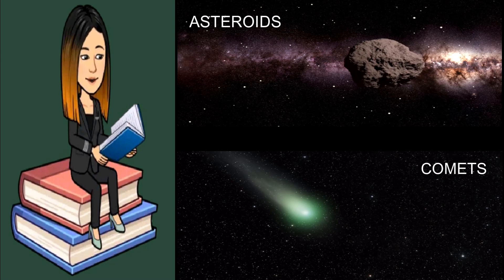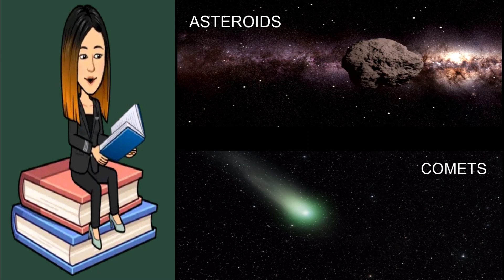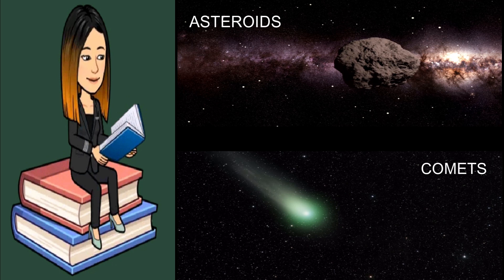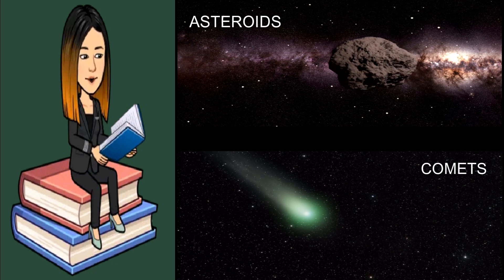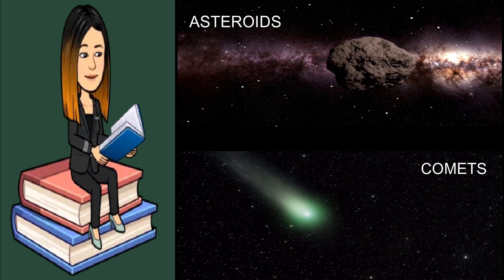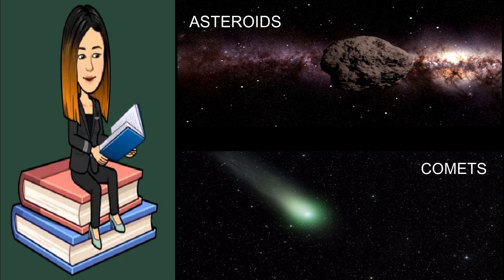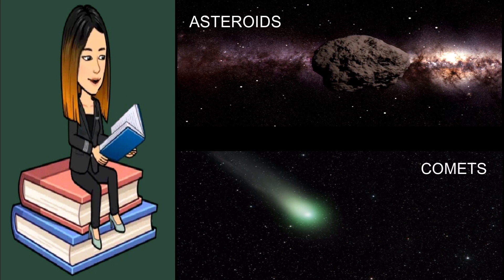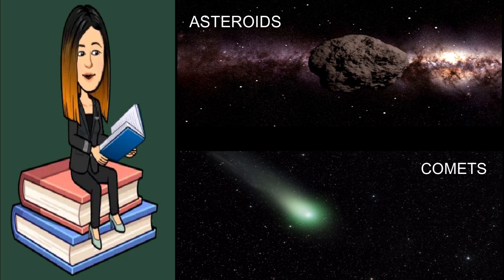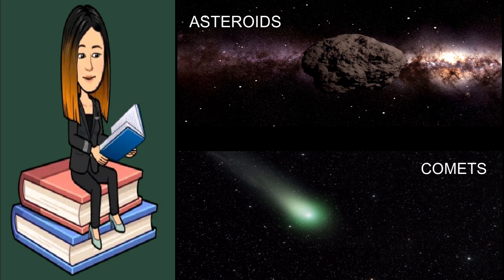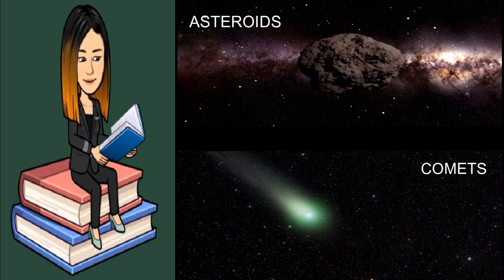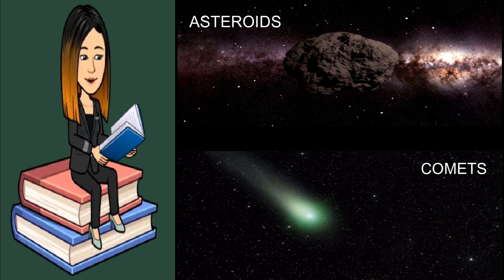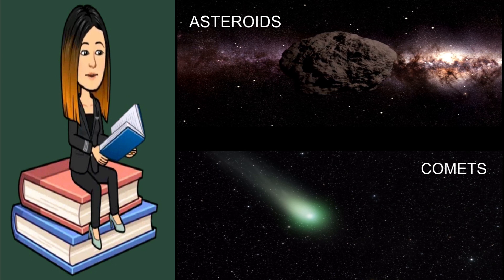For today's video I will be discussing what are comets and asteroids, and what are their similarities and differences. Comets and asteroids are referred to by scientists or astronomers as NEO, or near-earth objects. Comets are icy bodies while asteroids are rocky fragments.